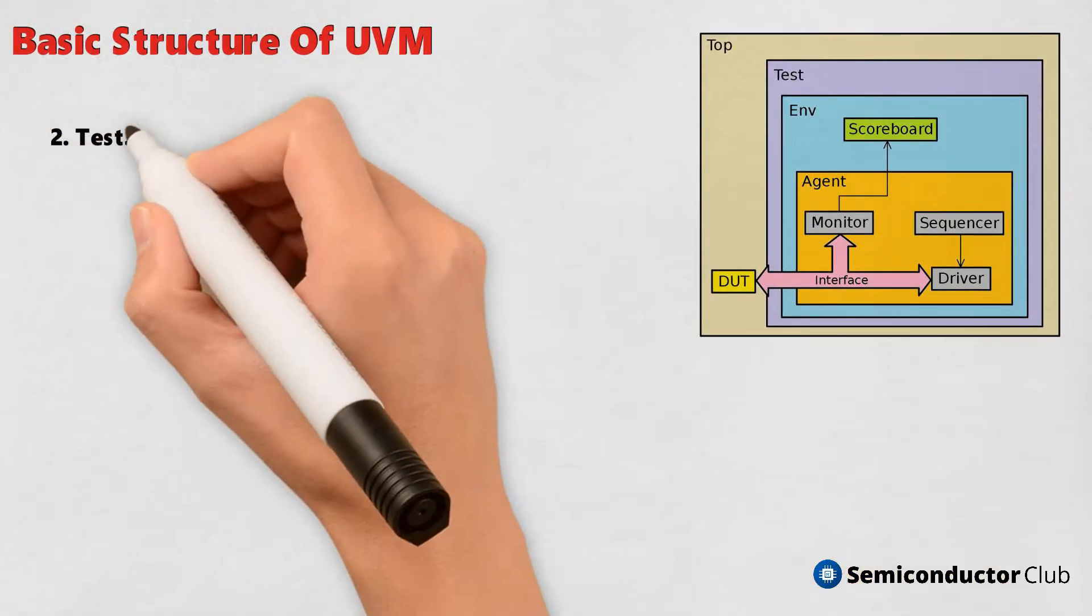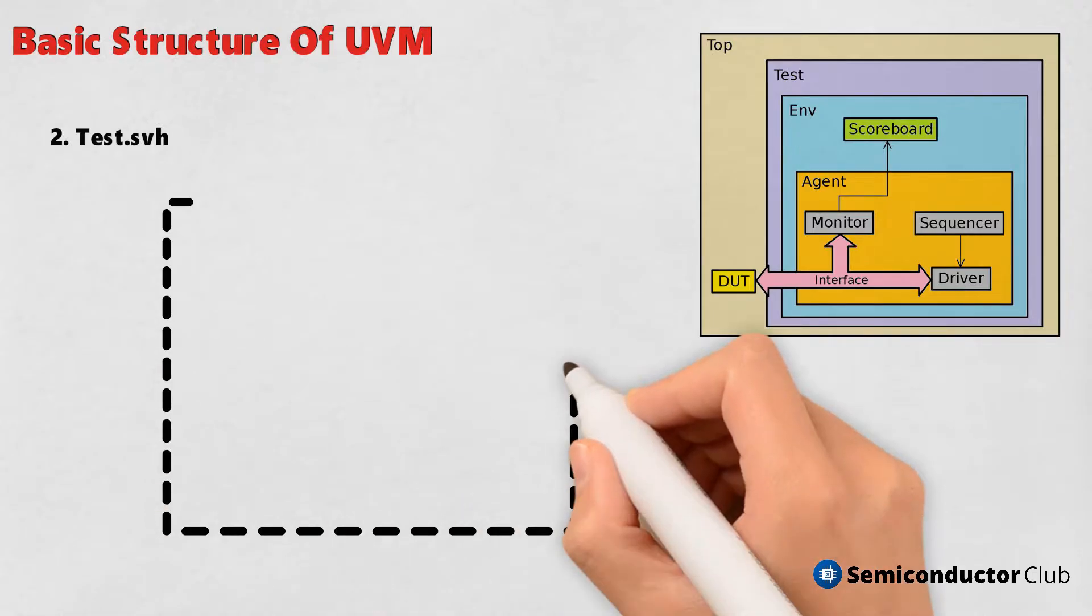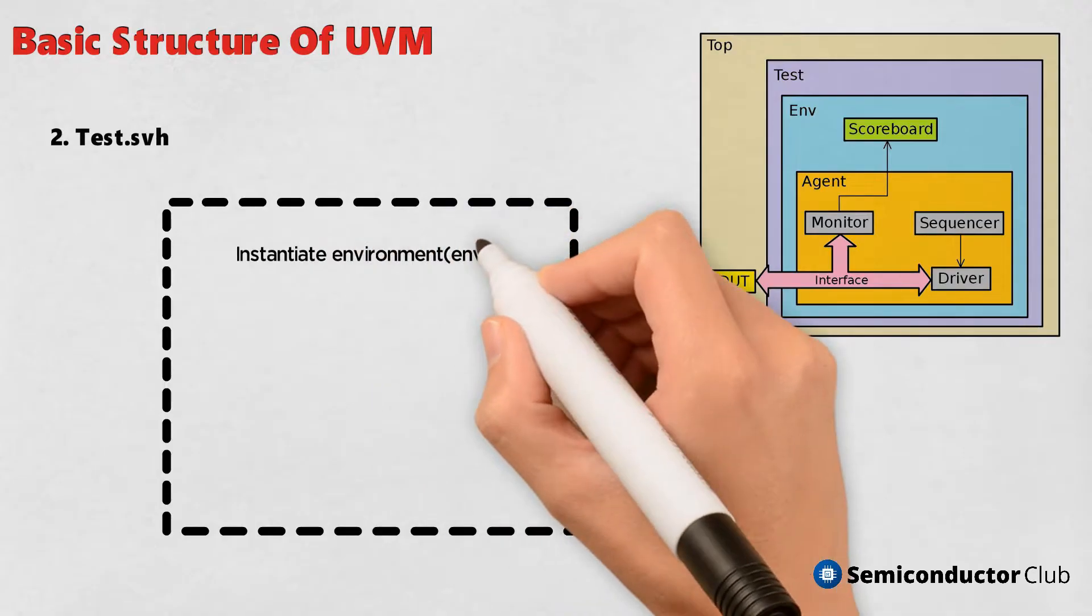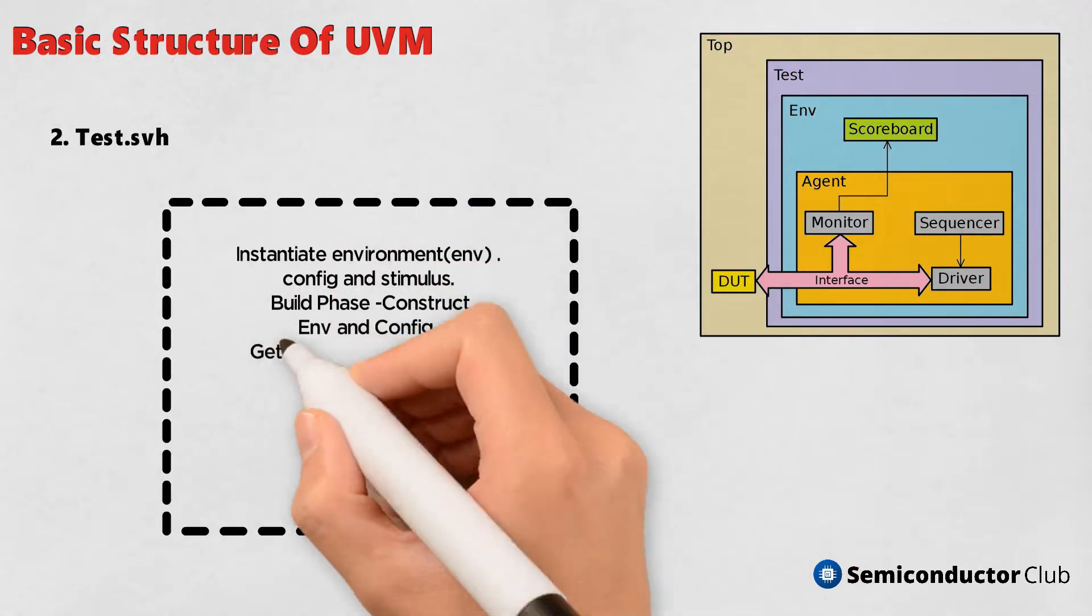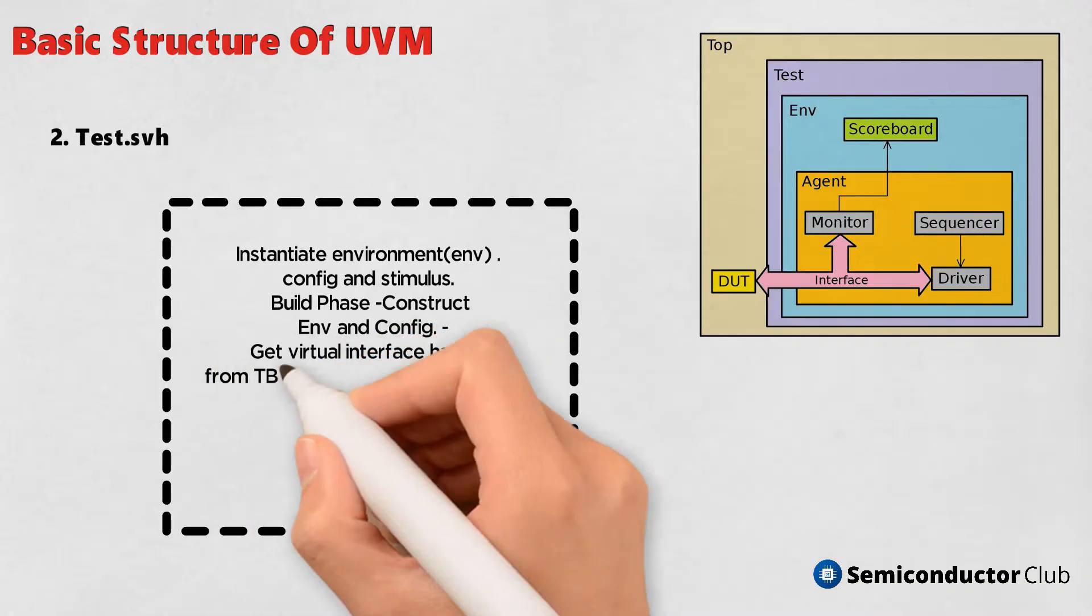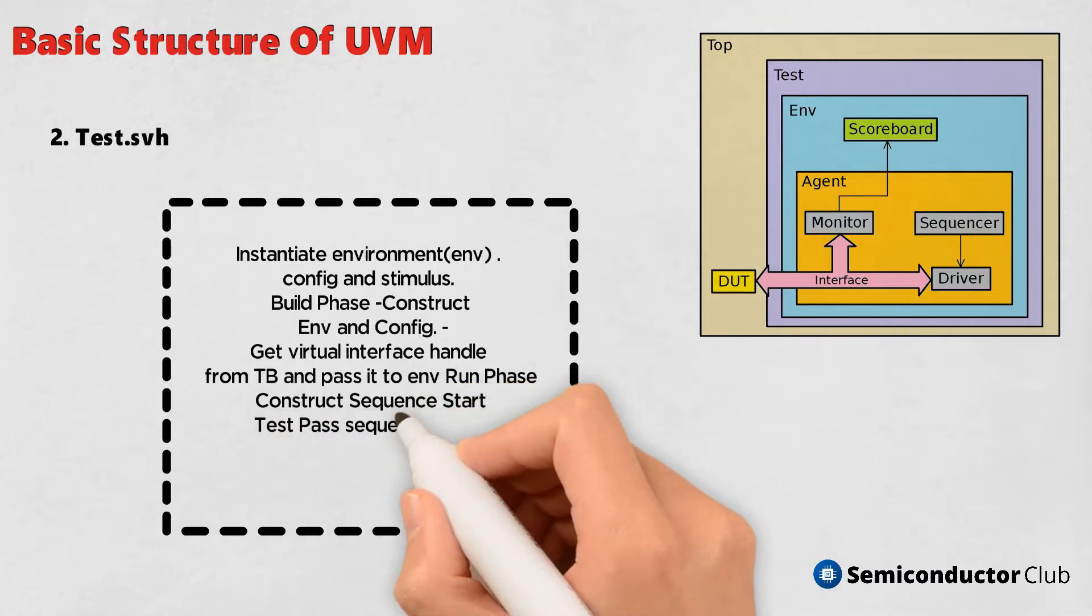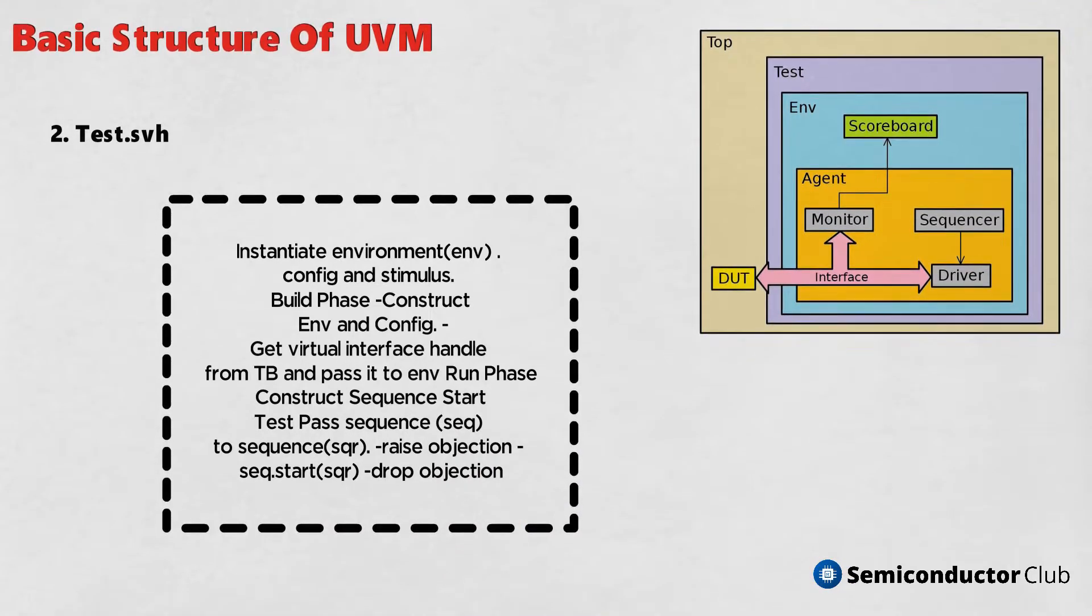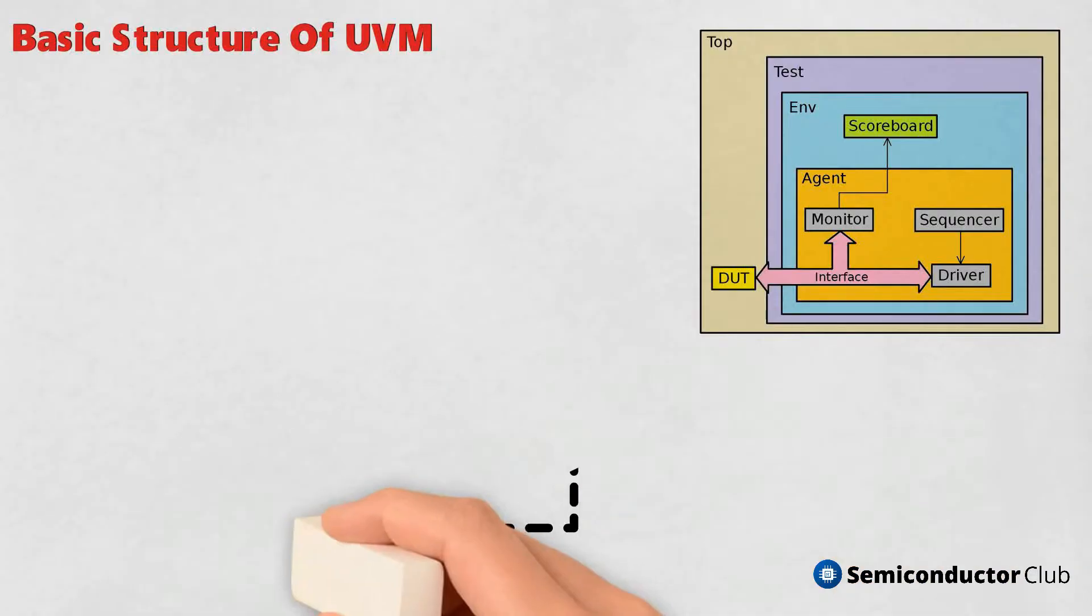2. Test.svh - Instantiate environment (env), config and stimulus. Build phase: construct env and config, get virtual interface handle from testbench and pass it to env. Run phase: construct sequence, start test, pass sequence to sequencer (sqr). Phase objection: sequence start (sqr), drop objection.